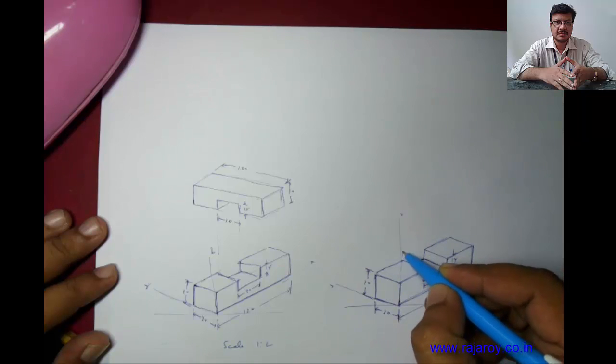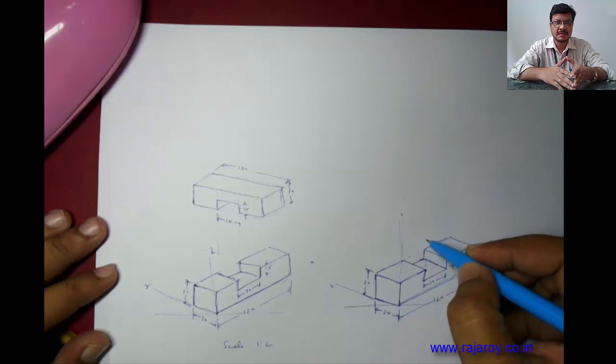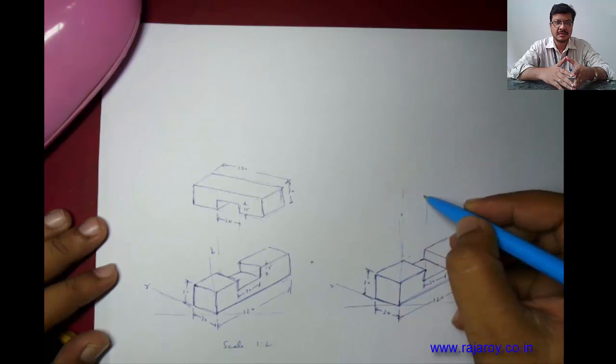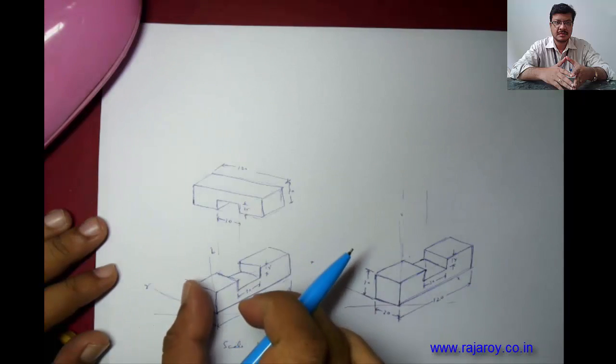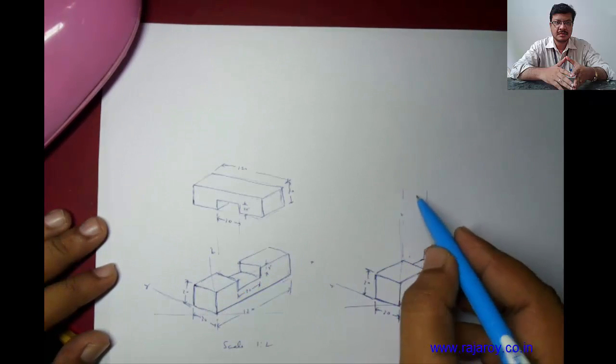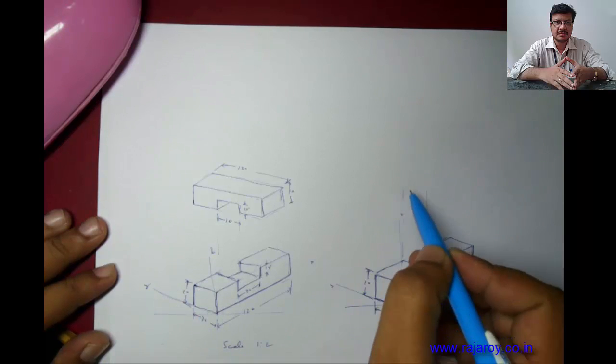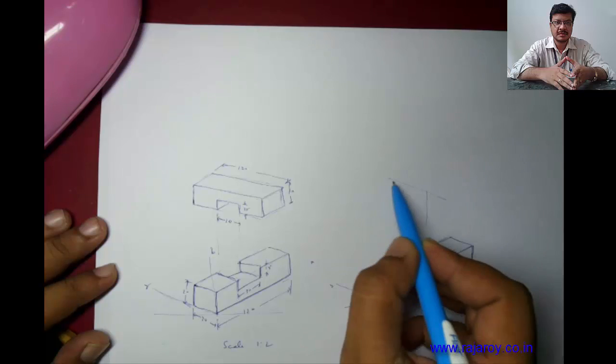Now coming to the top portion. Just draw the light extension lines from here, like this. Because the top portion has to fit into the bottom portion along this way. Now this particular line is parallel to y. Draw a line parallel to y-axis like this.